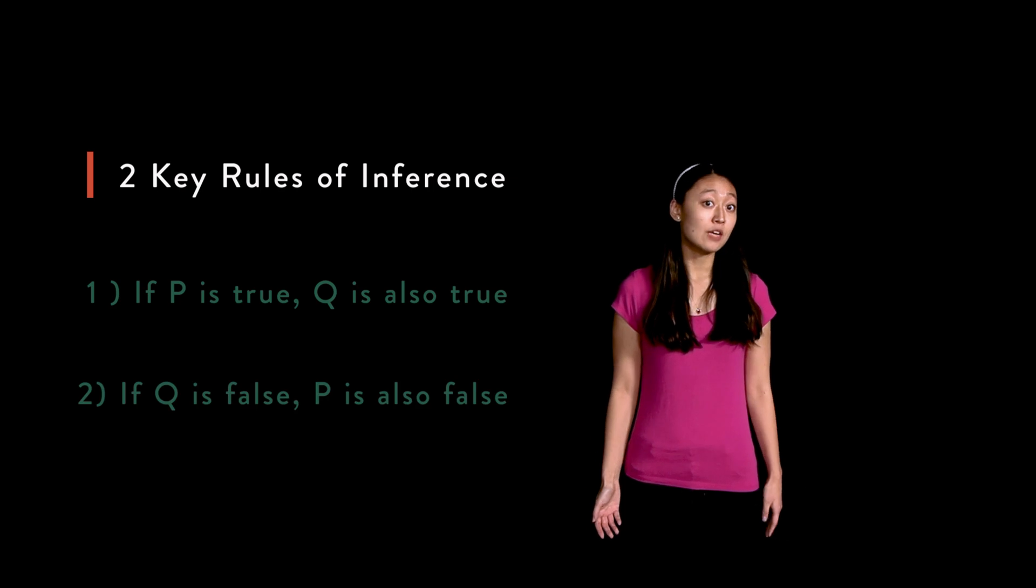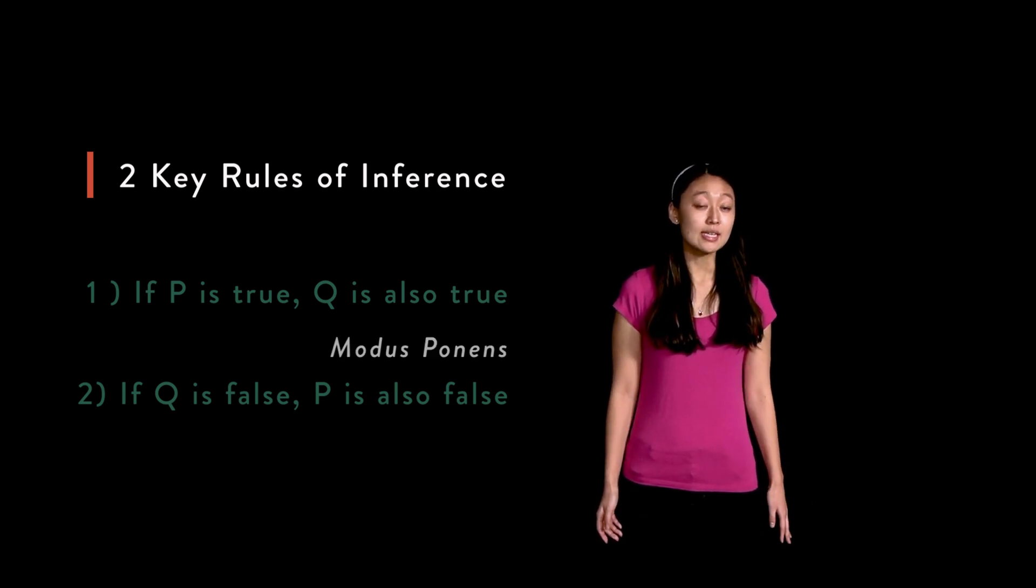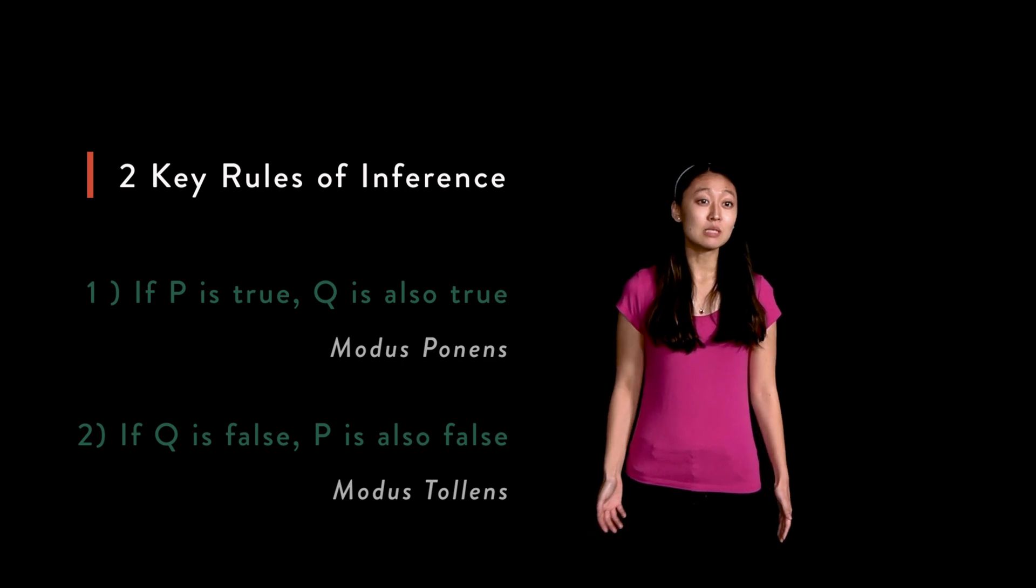On the other hand, if q isn't true, since we know the truth of p ensures the truth of q, then we know that p can't be true. The first of these is called modus ponens and the second is called modus tollens. Let's explore them further.